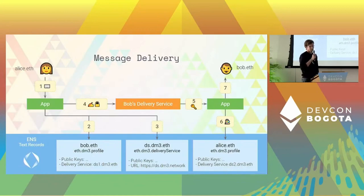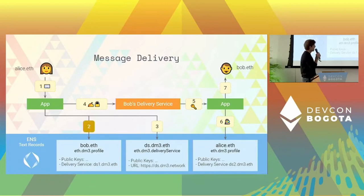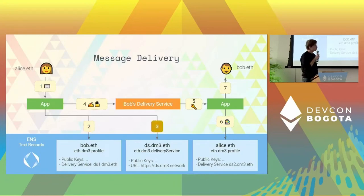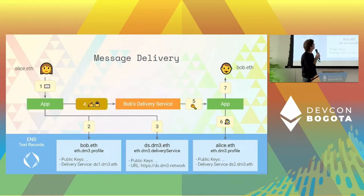This slide shows how a message would be delivered from Alice to Bob. First, Alice types a message into the app. Then the app will retrieve the DiEM3 profile of Bob, which contains the delivery service name he is using. In the next step, the app will retrieve the delivery service text record where there is the URL of Bob's delivery service.